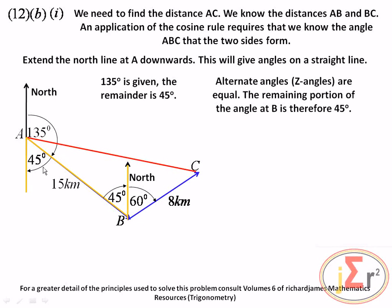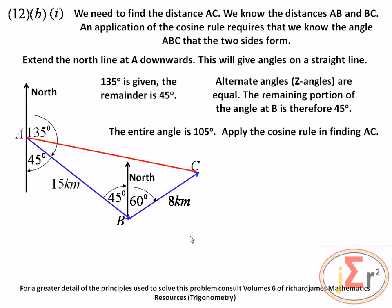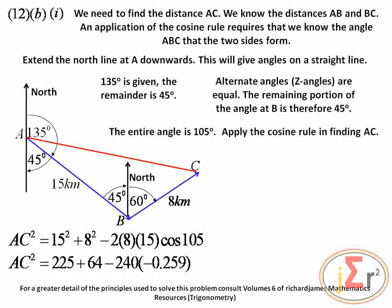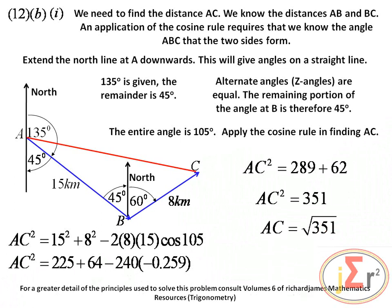We apply the cosine rule to find AC. AC squared equals 15 squared plus 8 squared minus 2 times 15 times 8 times cosine of 105 degrees. Simplifying, AC equals the square root of approximately 351, which turns out to be 18.7 kilometers.